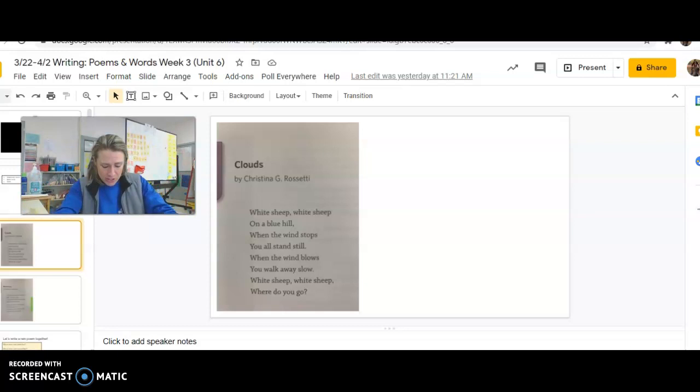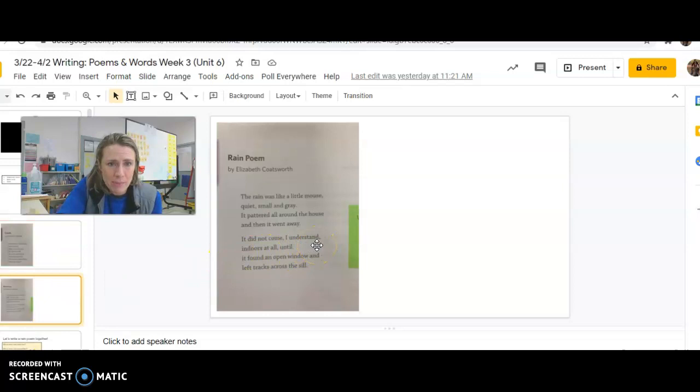Okay. So we're going to do one more poem and the poet does the same thing. Check it out. This poem is called Rain Poem by Elizabeth Coatsworth. Let's see if it's really about rain. Ready?